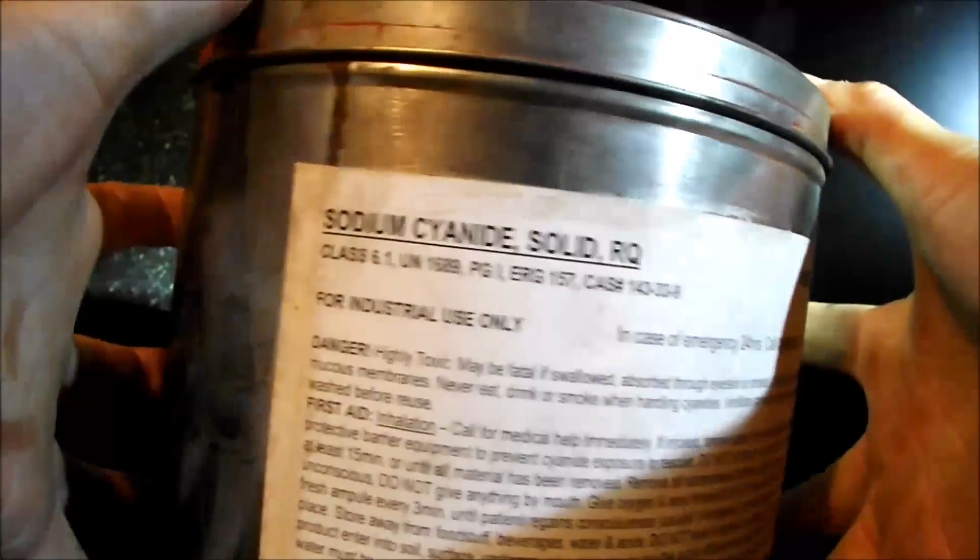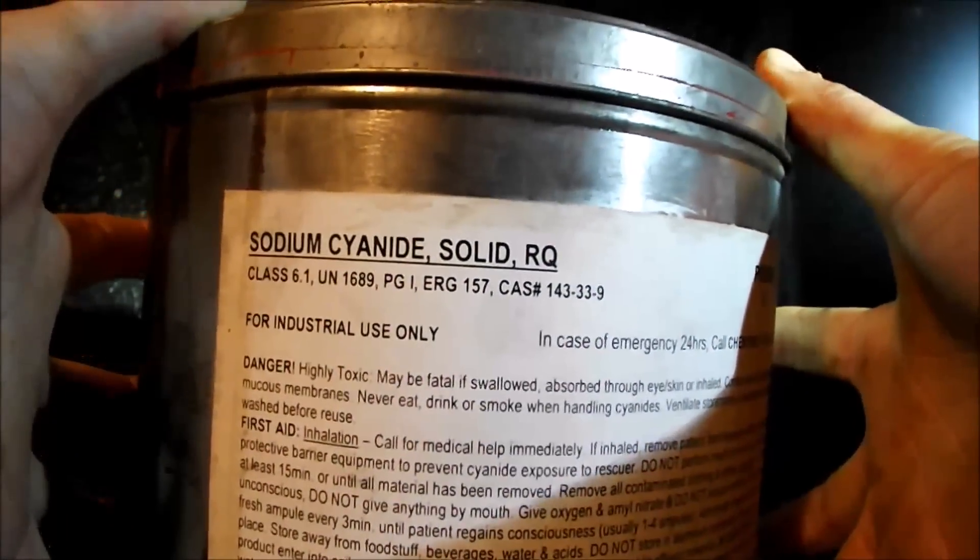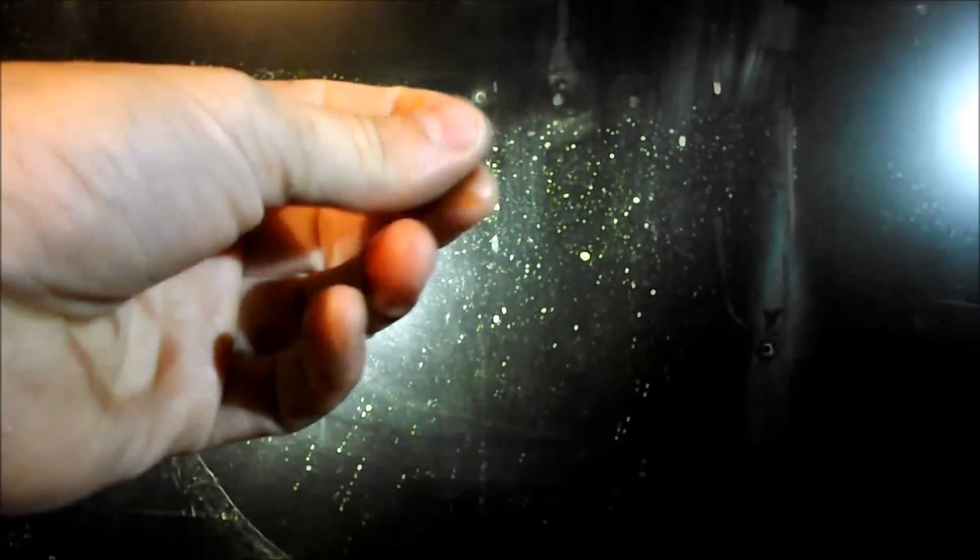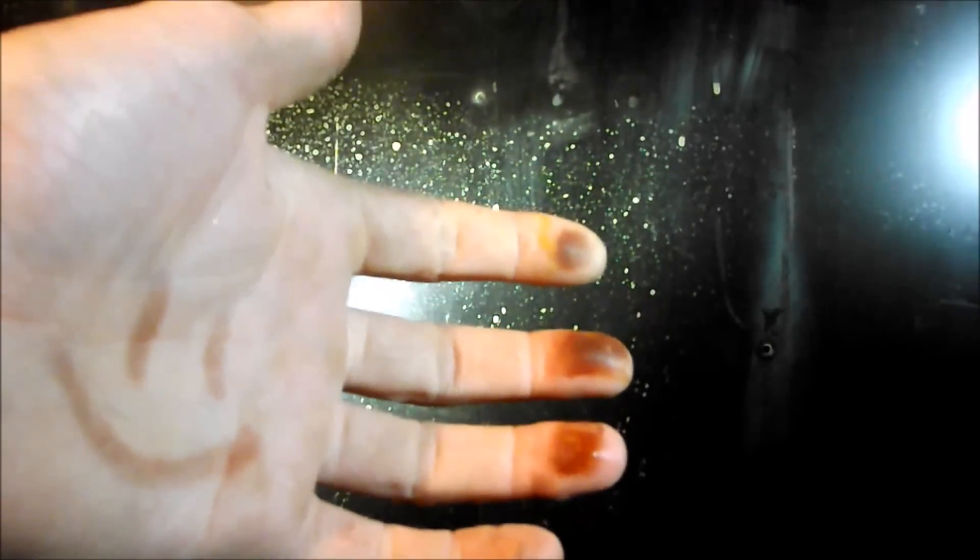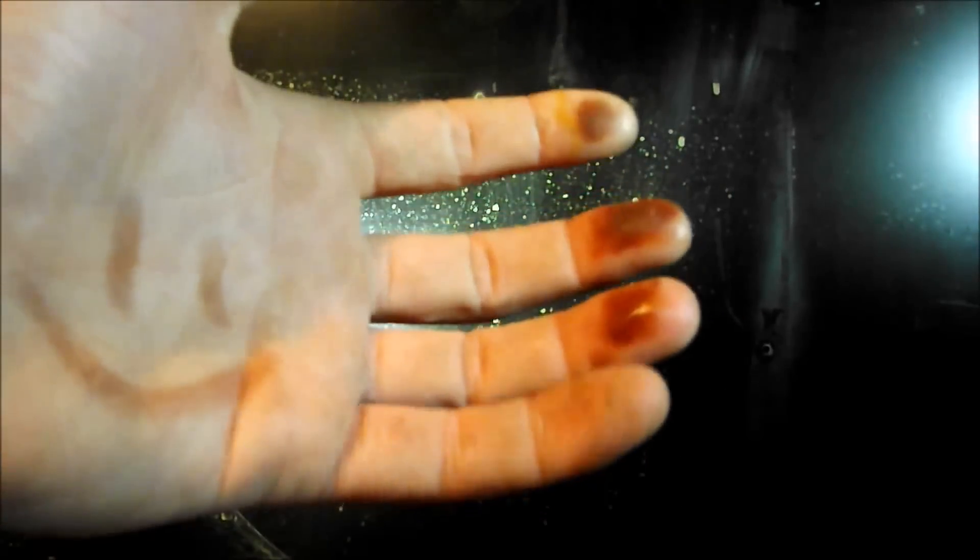Fortunately, I happen to know that sodium cyanide, in the presence of oxygen, will dissolve silver quite readily. That is what they use in silver mining. And it will also dissolve silver chloride, so it's actually going to permanently remove this staining.